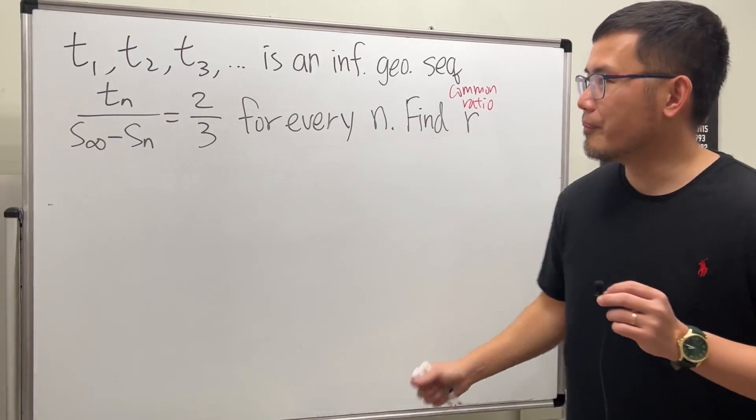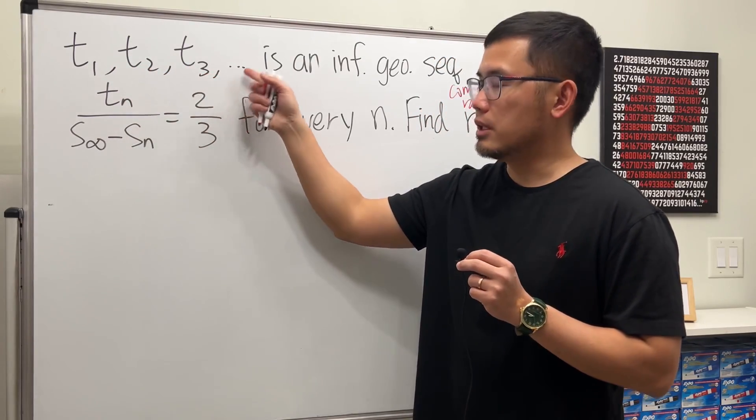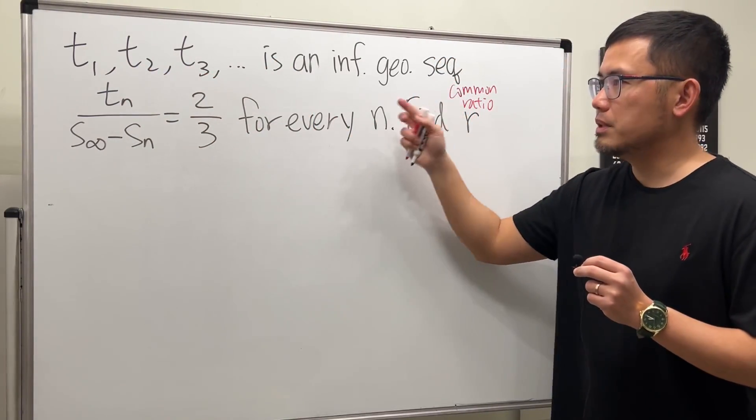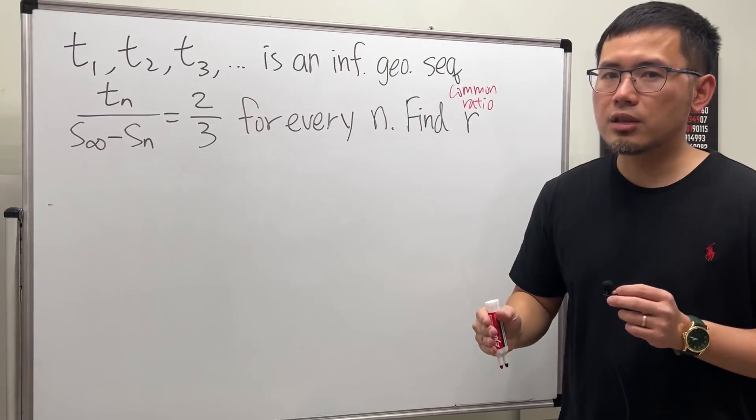So here's the deal. Let's go over some notations first. t1, t2, t3, and so on. It's a sequence because this is just a list of the terms. tn here is the nth term.